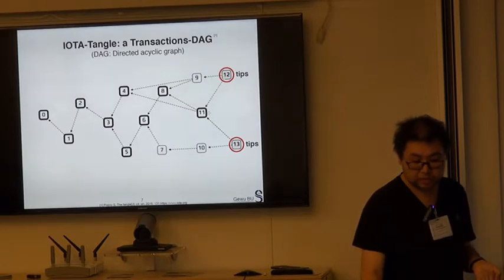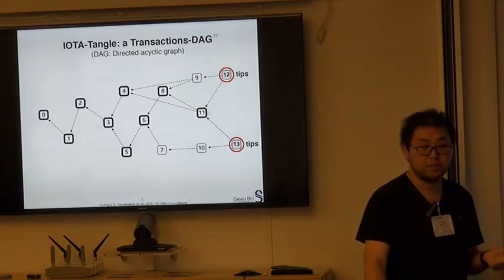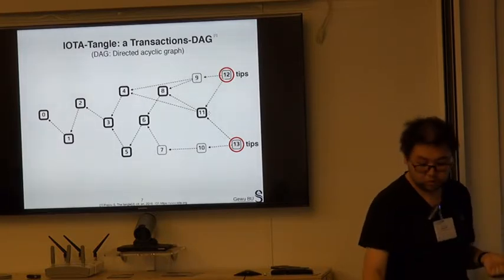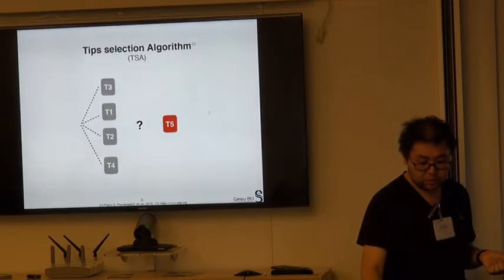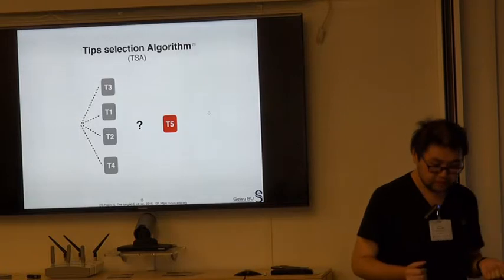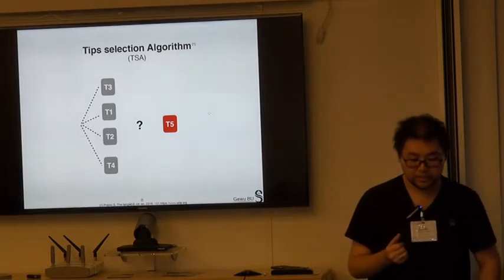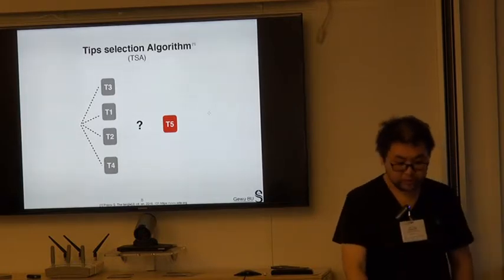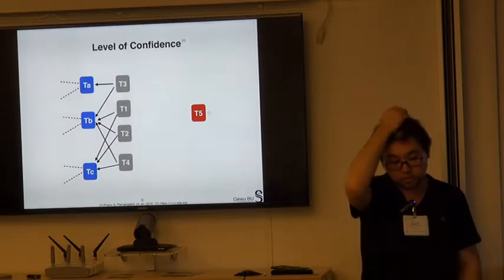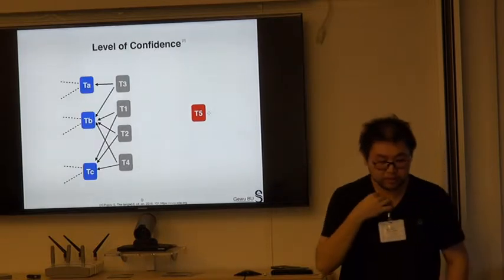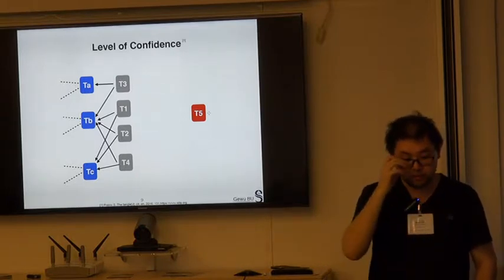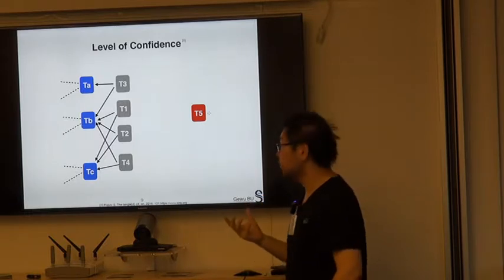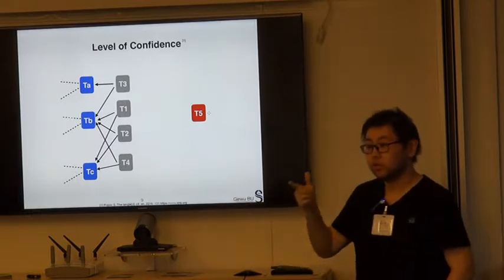Transactions that have not been chosen as parents are called tips — like transactions 12 and 13. The key problem of IOTA is how a new incoming transaction chooses its parents. We call this the tip selection algorithm. From the definition of the tip selection algorithm, we can define the level of confidence. The confidence level of a transaction is how likely a new incoming transaction will approve, will verify, will trust your transaction.